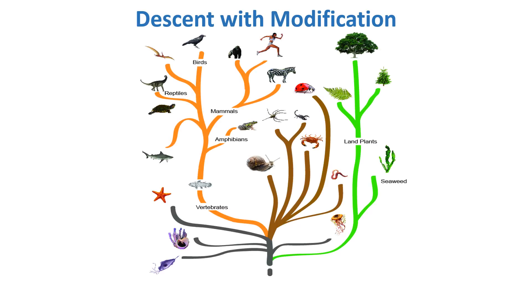Let's see a diagram of this tree of life. In this diagram, you can see a common ancestor. From this common ancestor originate arthropods, mammals, amphibians, plants, and different organisms — all different organisms originating from a single common ancestor.